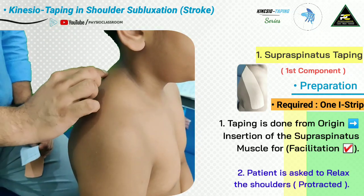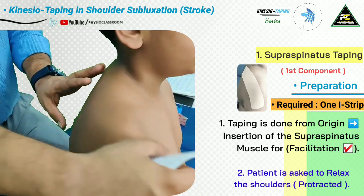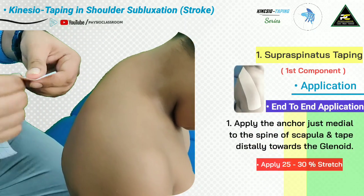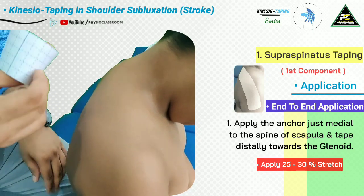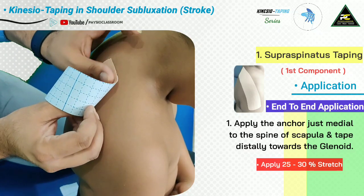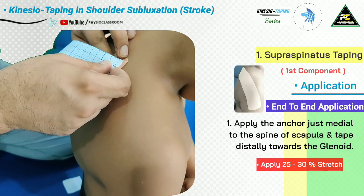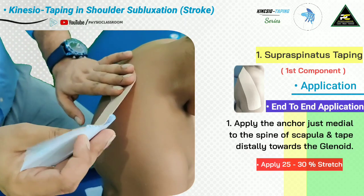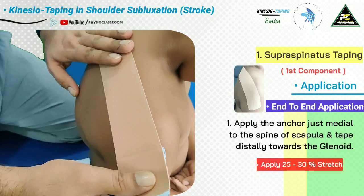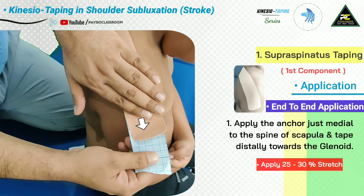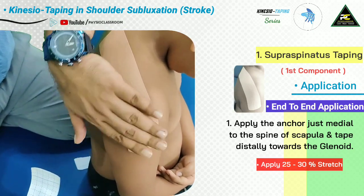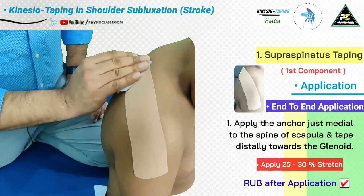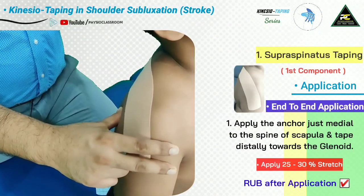Before the application, the overlying skin is stretched by asking the patient to sit in a relaxed posture so that the shoulders are protracted. We then tear the anchor and apply it just medial to the spine of the scapula. We remove the paper backing, leaving some for the distal anchor, then apply around 25 to 30 percent stretch. The last part is applied with no stretch. Rub the tape to ensure adherence by activating the glue, then return the patient to the neutral position.